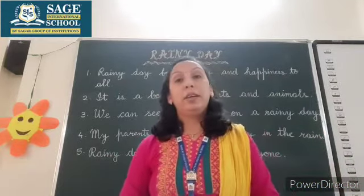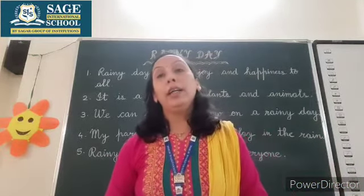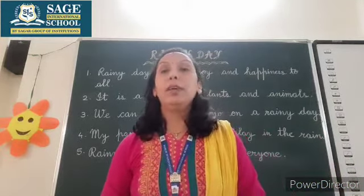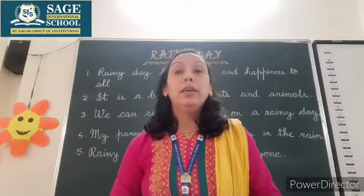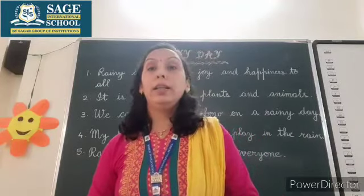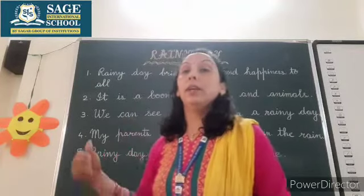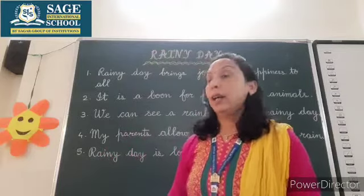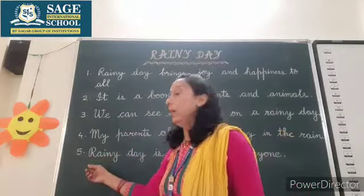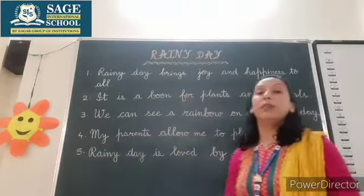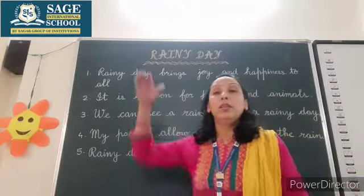We all love rain, so the last line I have written is: 'Rainy day is loved by everyone.' This way we can write five sentences on any topic. Whenever you are given a topic, first write a sentence for introduction, then go for the detailed part, and in the end conclude with the last line — like 'Rainy day is loved by everyone.'